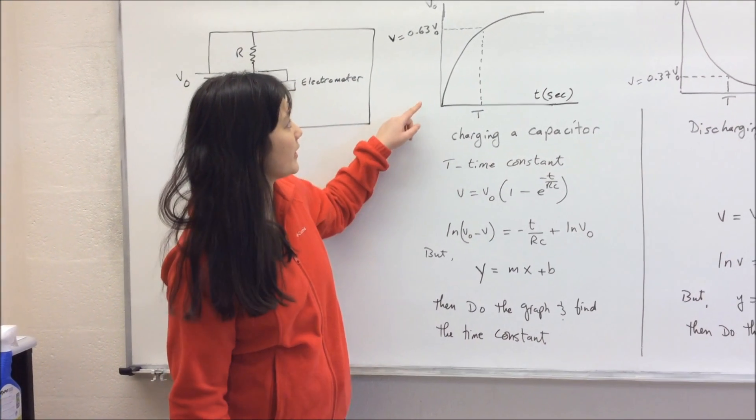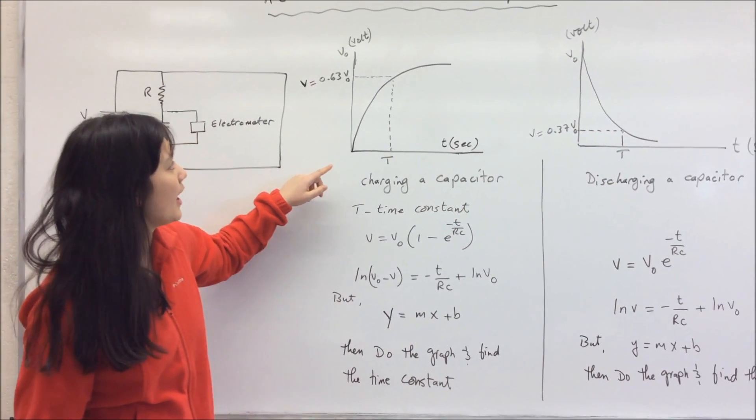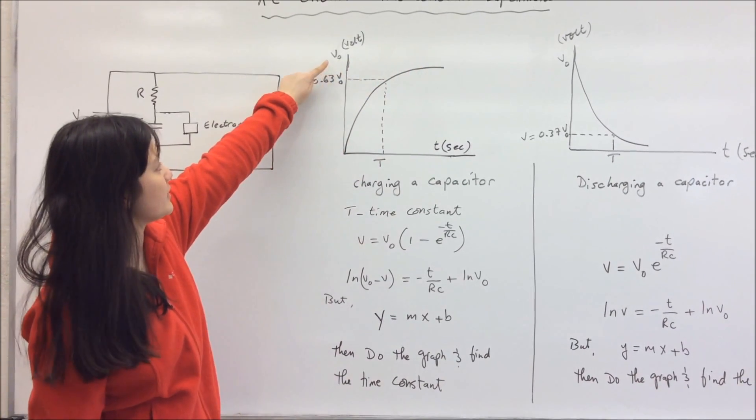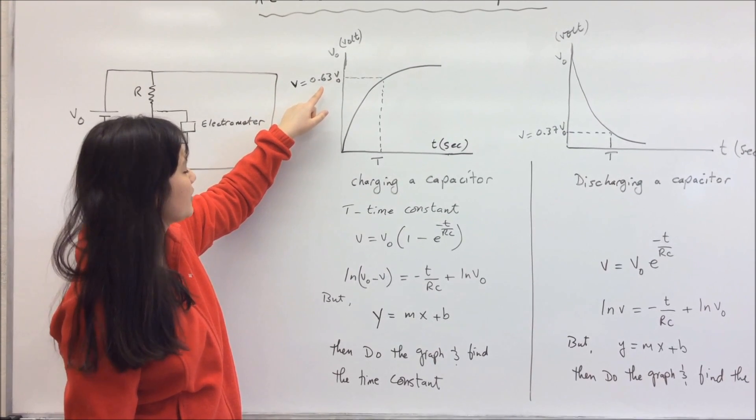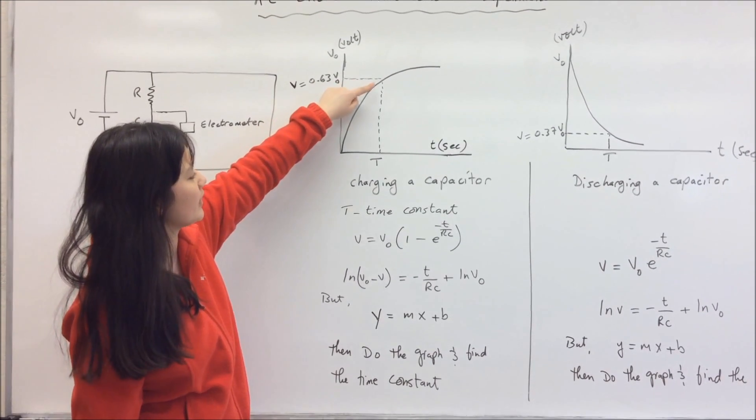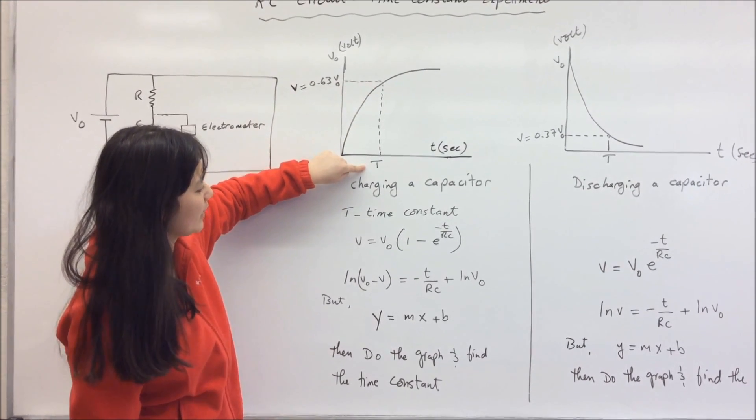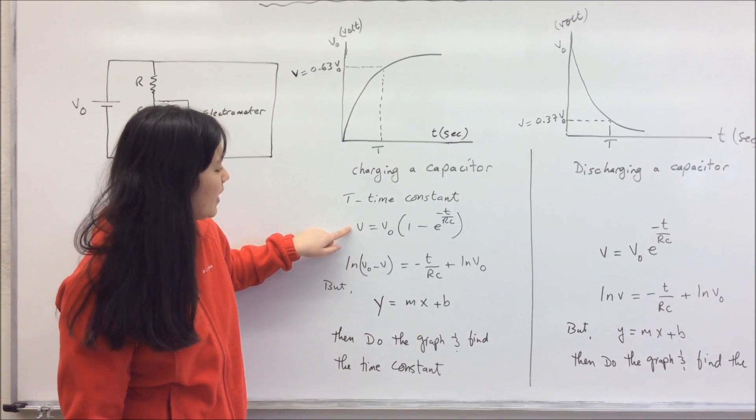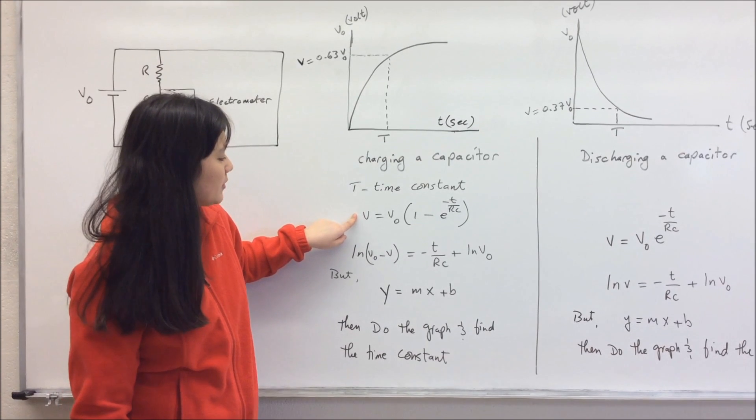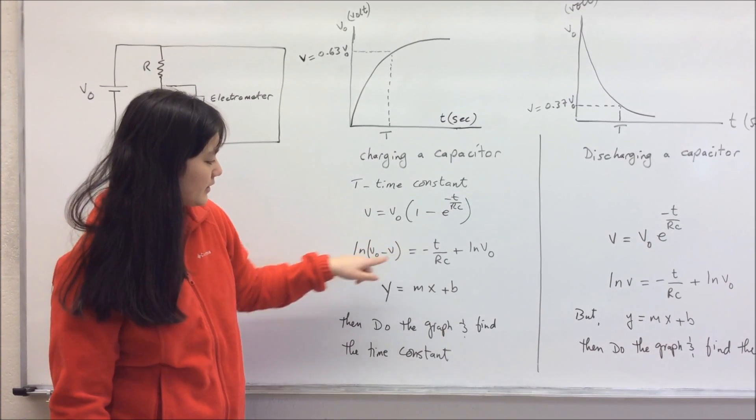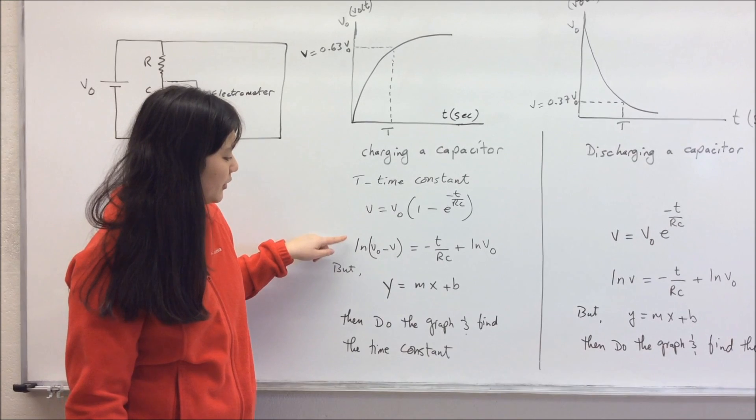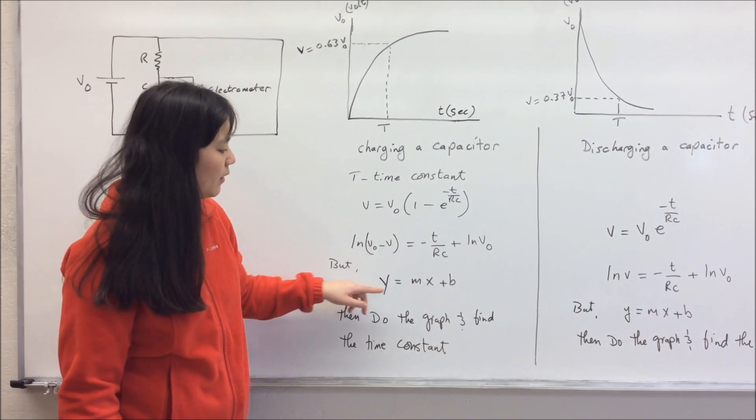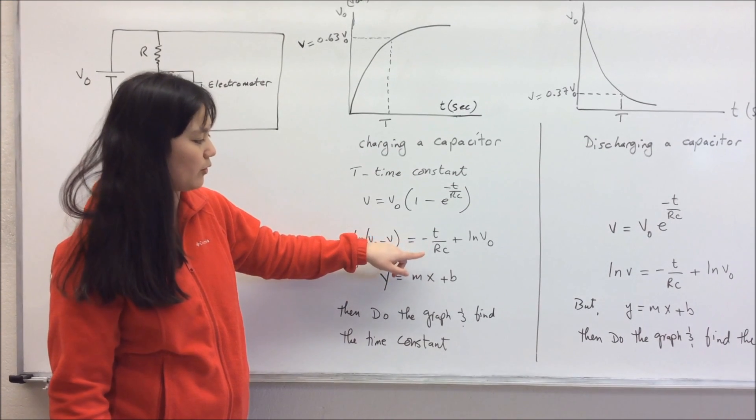This is what the graph looks like for a charging capacitor. As you can see, the maximum voltage is going to be at the value of V0. And if you take 63% of V0 and you draw a straight line down like this, then you can find the time constant. And this is represented by this equation here, and if you manipulate this equation by taking the natural log of both sides, you get this expression, and this is similar to the equation of a straight line, y equals mx plus b, where m the slope is 1 over RC.